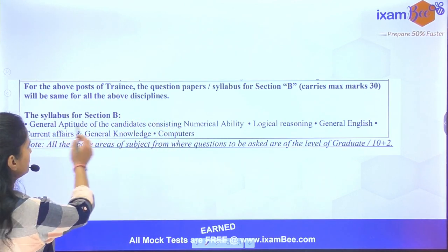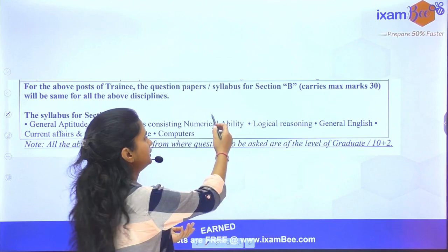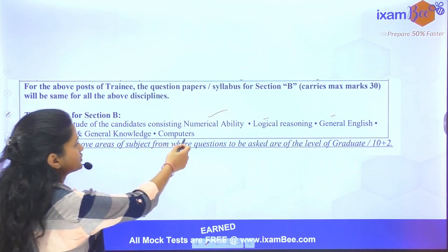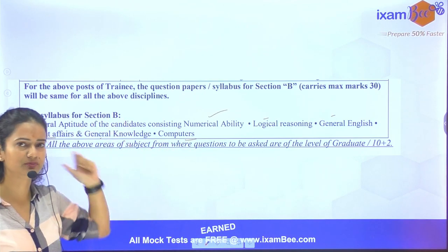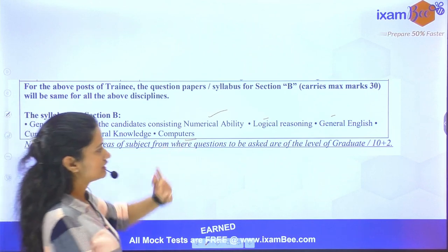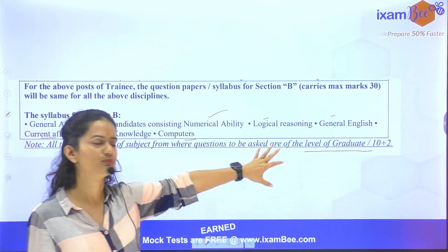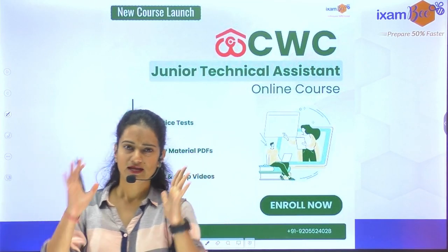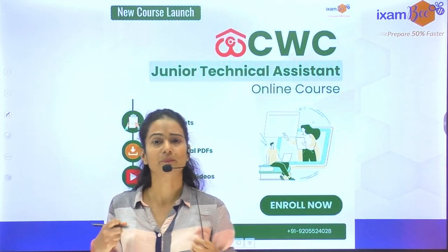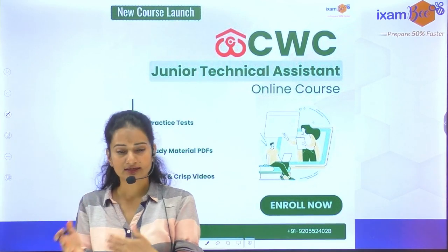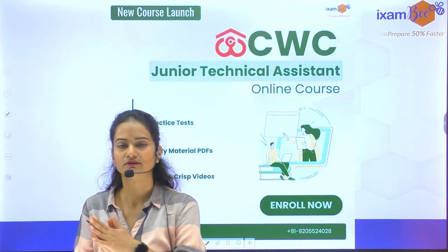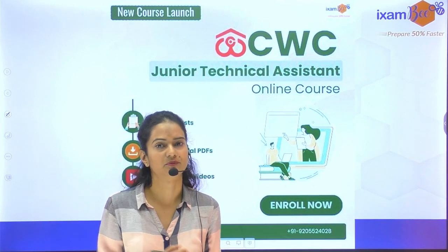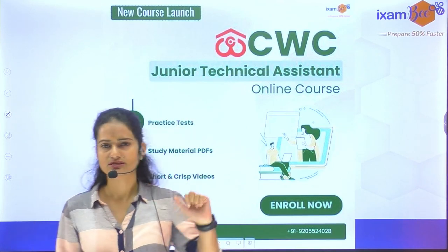Section B is similar across all trainee posts, covering general aptitude: numerical ability, quant, reasoning, English, current affairs, general knowledge, and computers — for 30 marks. The level of questions is graduation or 10+2 level. This was meant to give you a head start until the latest syllabus and exam pattern is released. You can also look at CWC — Central Warehousing Corporation — vacancies for junior technical assistant.